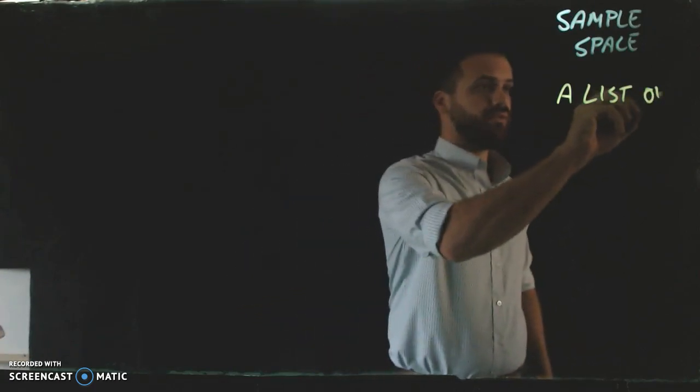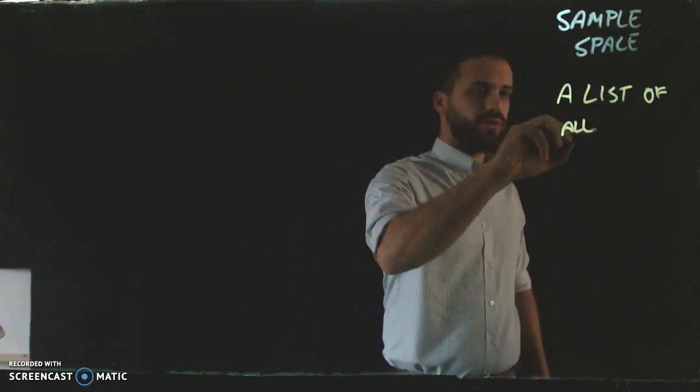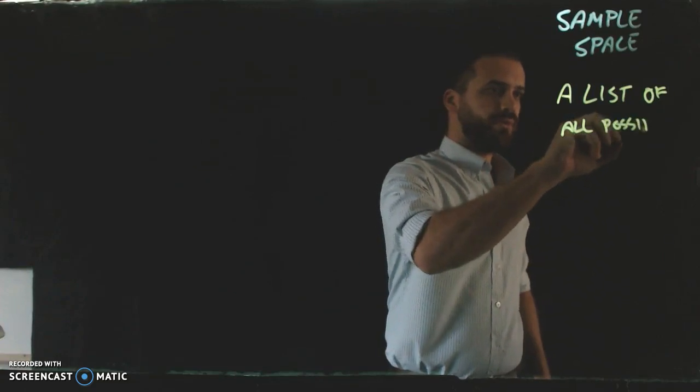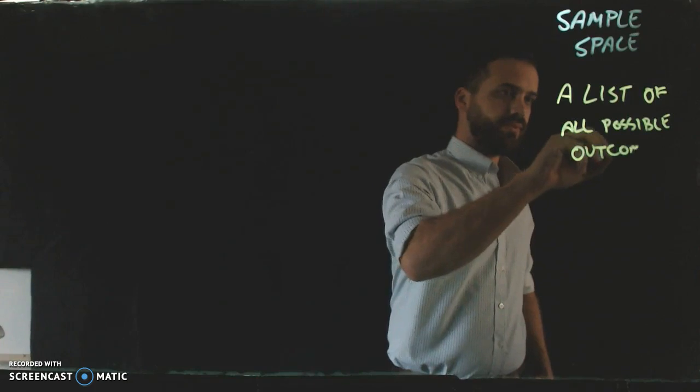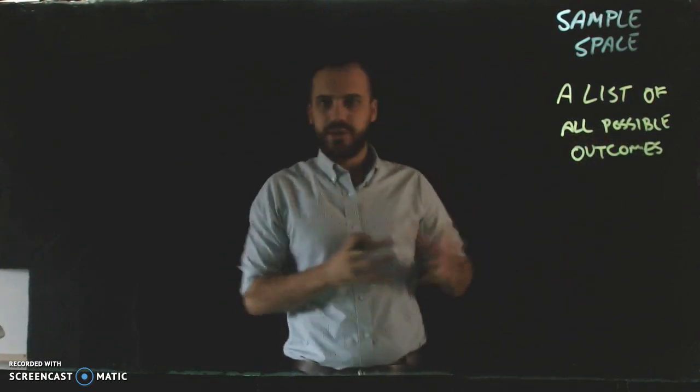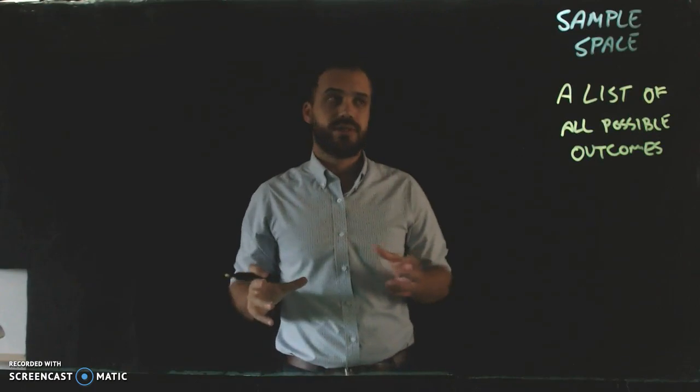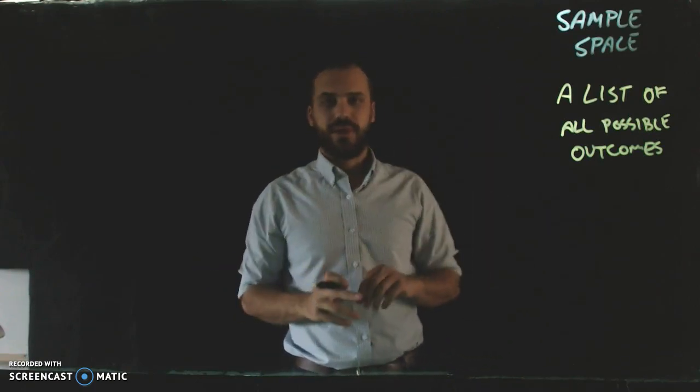It's a list of all possible outcomes. So if we're doing an experiment, all the possible things that can happen, that's what our sample space is.